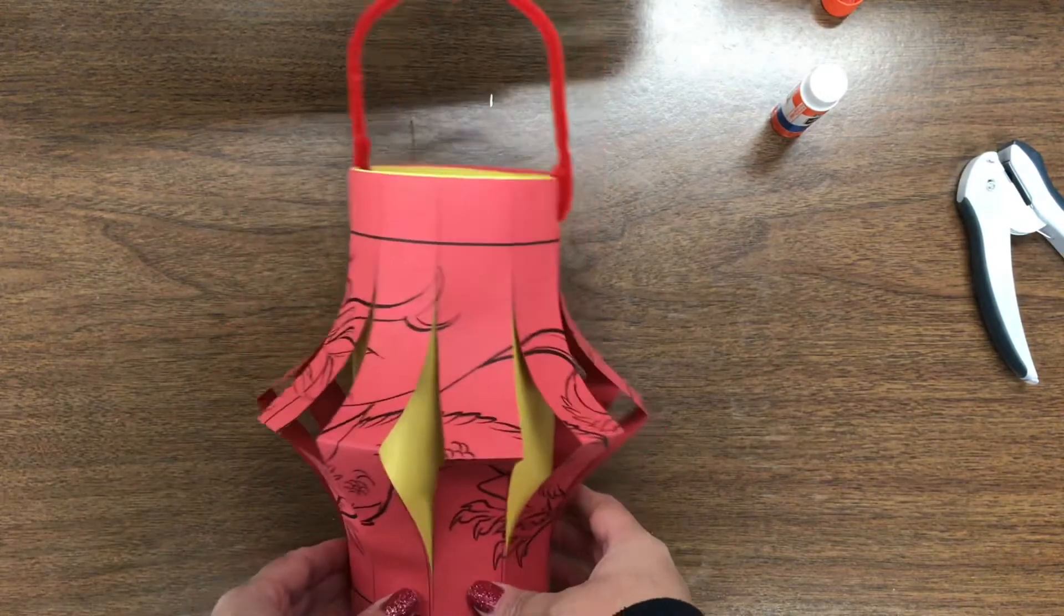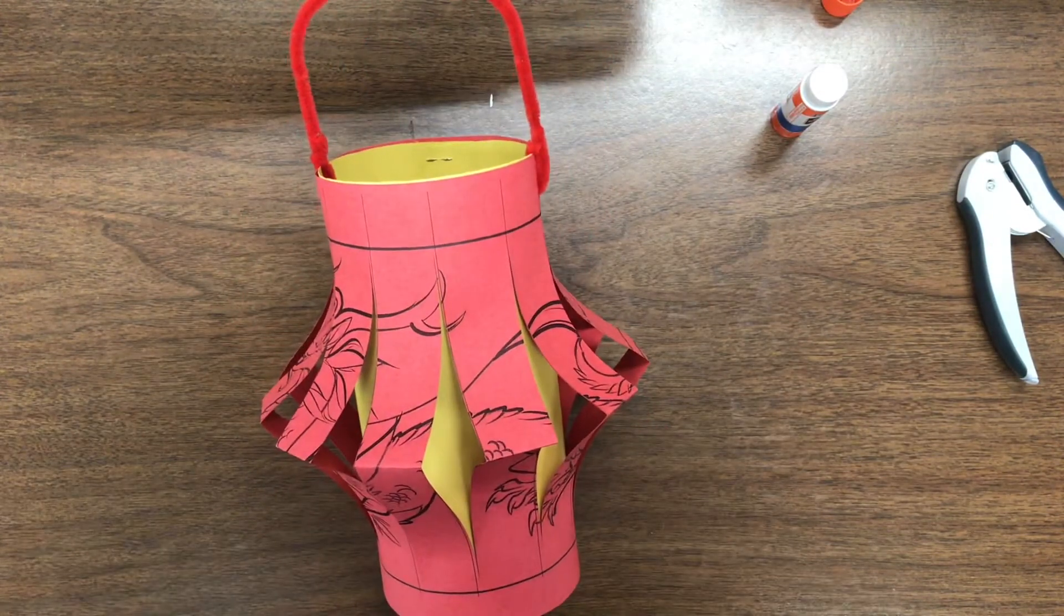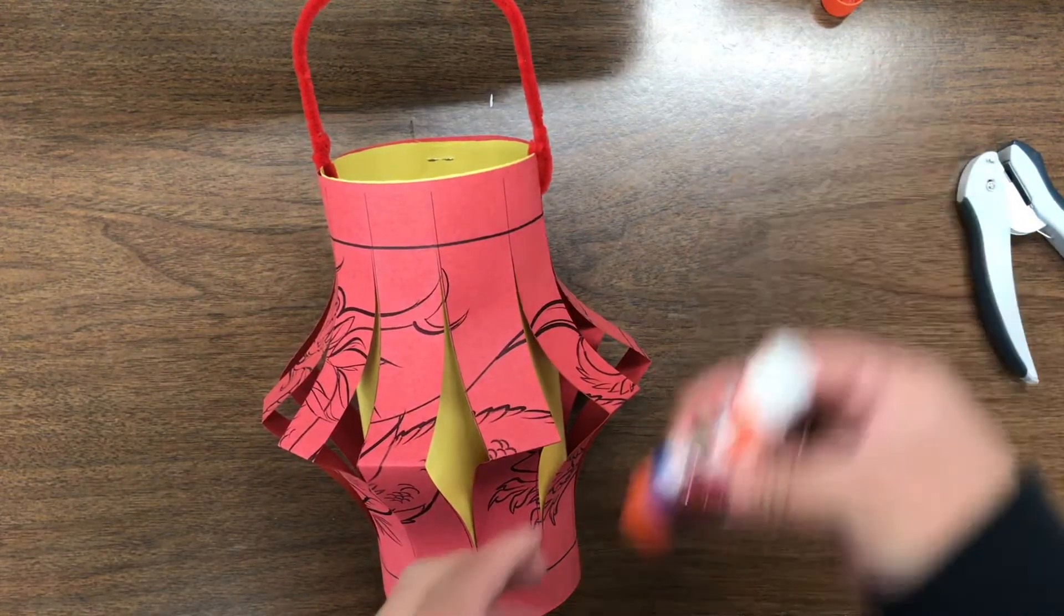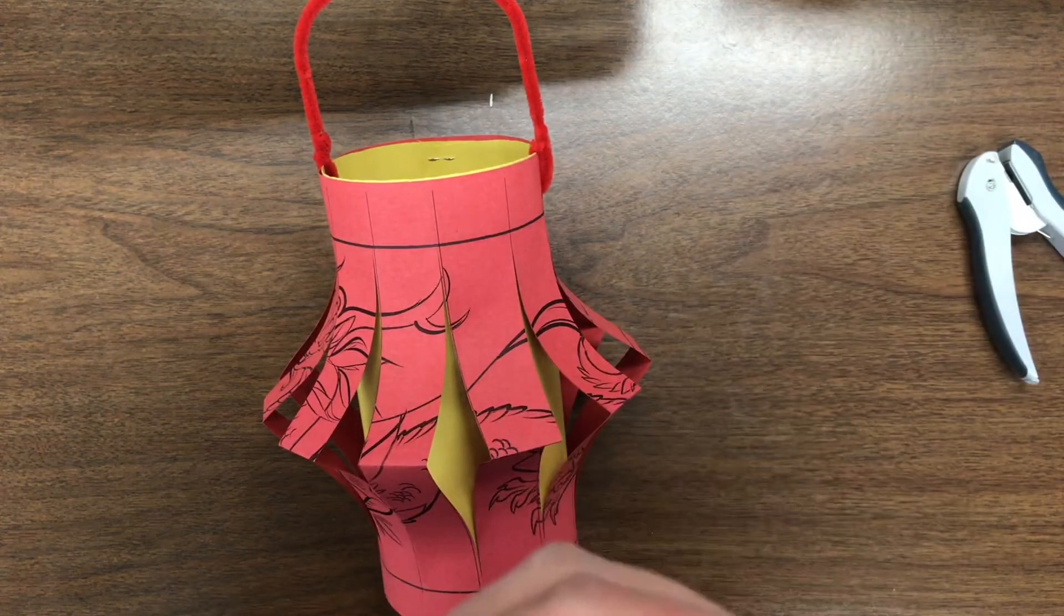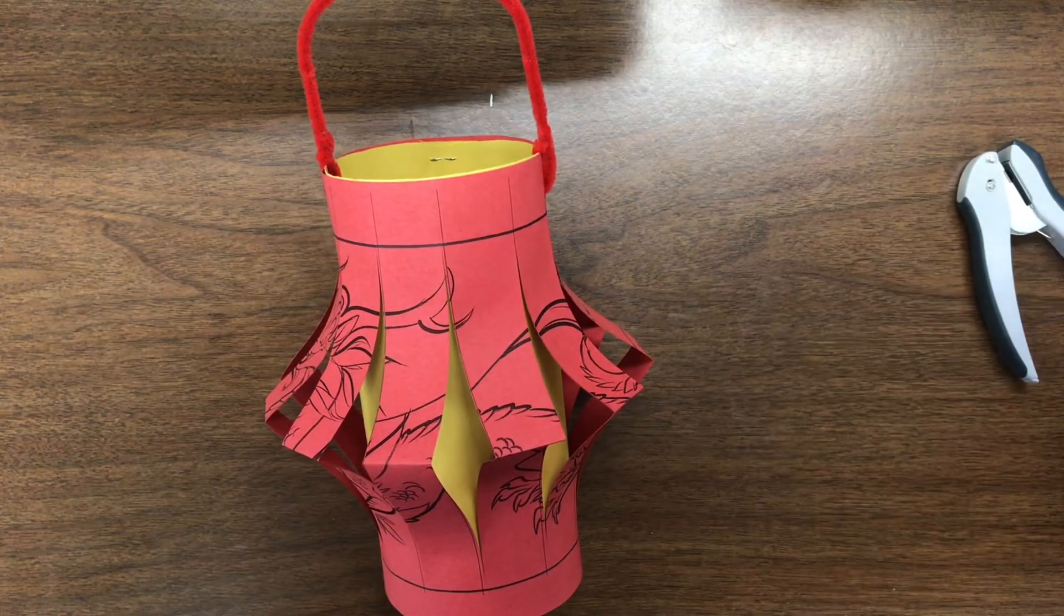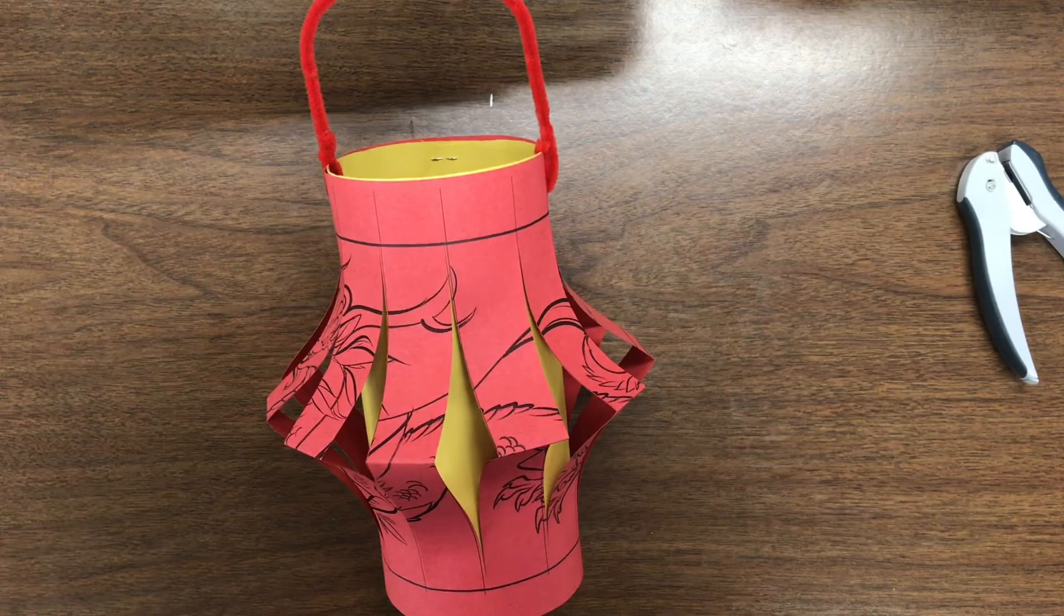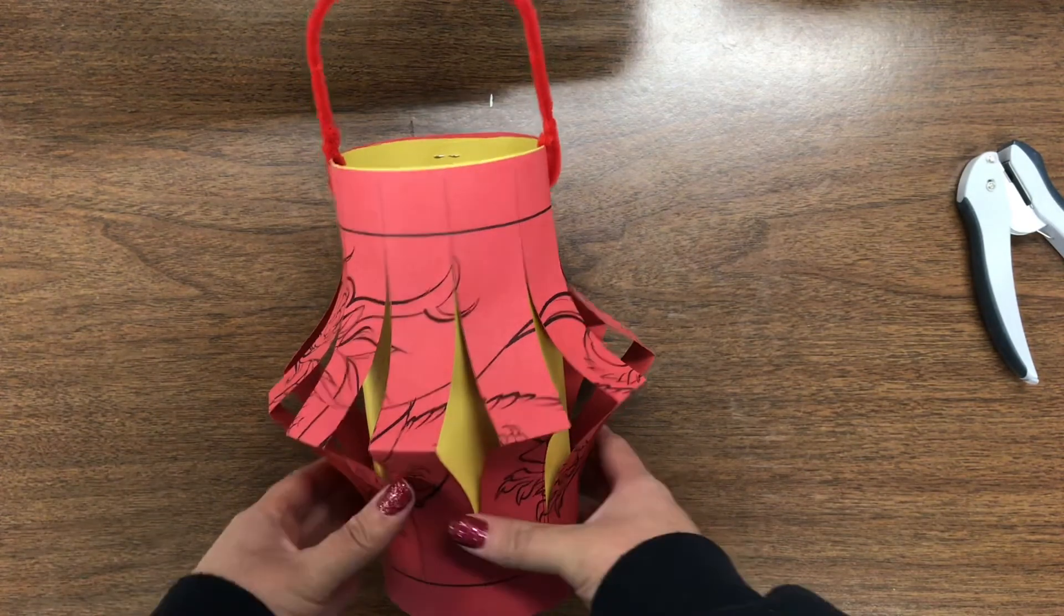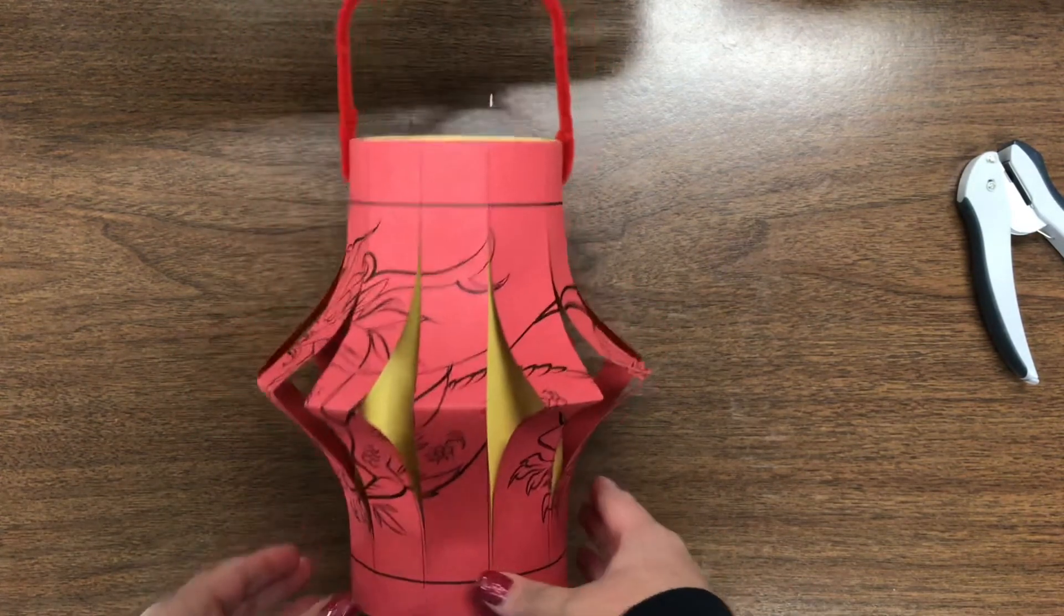All right, I hope you had fun making your lantern kindergarteners and I will see you for the next project. Oh my gosh, I forgot to put my cap on my glue stick, I better do that so it doesn't dry out. All right, don't forget to clean up your mess so your grown-ups don't get mad at you and I will see you for our next art project. See you later.